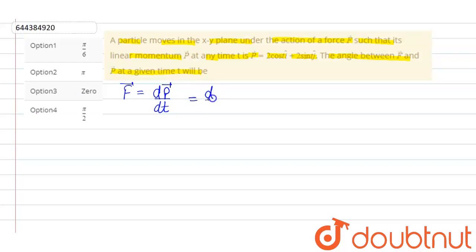That means if we differentiate the momentum with respect to time, that is 2 cos t i cap plus 2 sin t j cap.